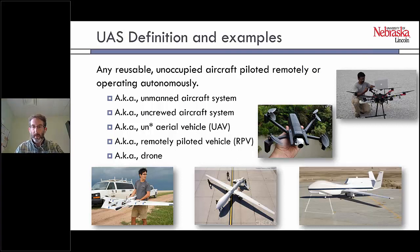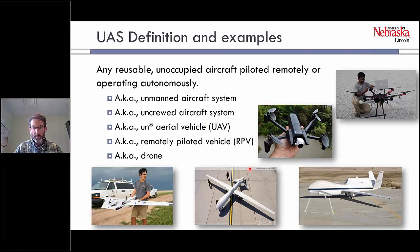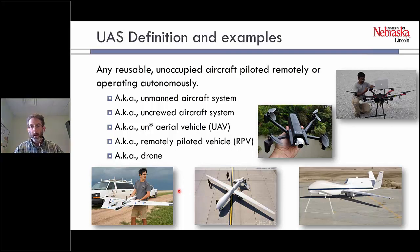Regardless of what you call them, they take these forms. These five pictures capture the breadth of what UAS actually are. They could be larger things like the Global Hawk — a commercial aircraft-sized UAS — or the Predator, which I'll talk about in some of my work. The two main classes are multi-rotor, like the Parrot and the M600, versus fixed-wing. I use both in my research and can address advantages and disadvantages in questions.